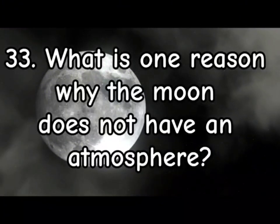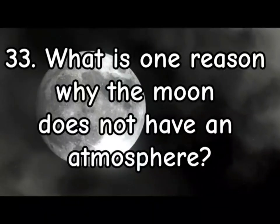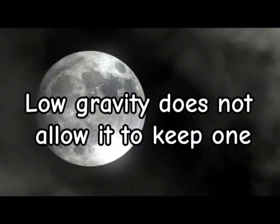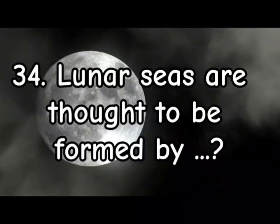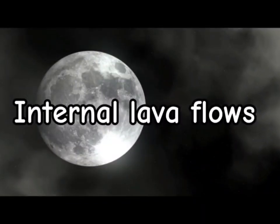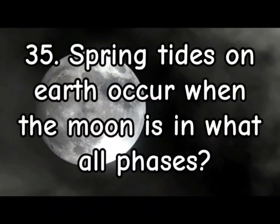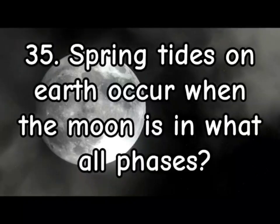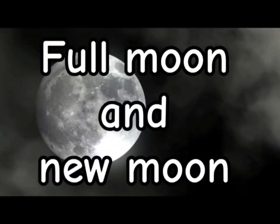33. What is one reason why the Moon does not have an atmosphere? Low gravity does not allow it to keep one. 34. Lunar seas are thought to be formed by internal lava flows. 35. Spring tides on Earth occur when the Moon is in what phases? Full Moon and New Moon.